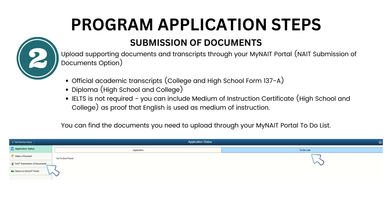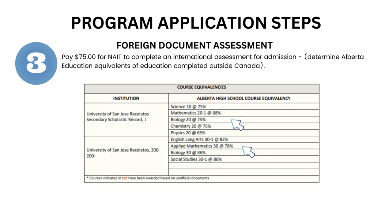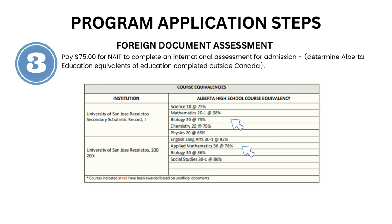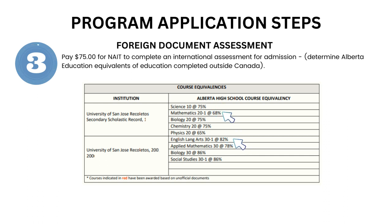Next is the international document assessment. You will be notified about this process in your MyNAIT portal to-do list. During this step, you must pay the international student assessment fee of $75 Canadian dollars for NAIT to initiate the international document assessment for your admission. The purpose of this step is to determine the Alberta education equivalence of your education completed outside Canada, and to determine if you have fulfilled the academic requirements of your chosen program.